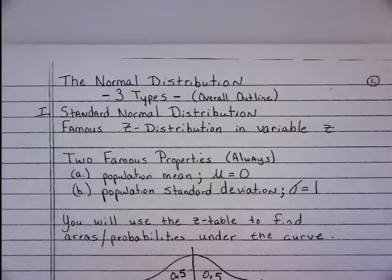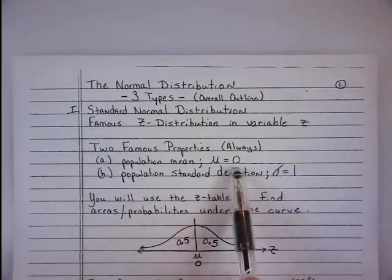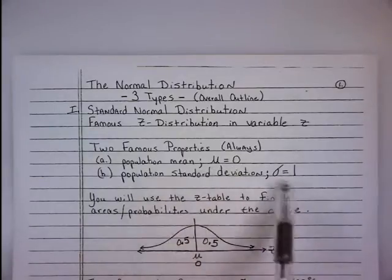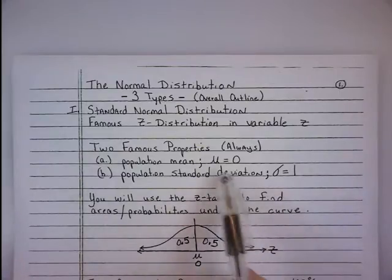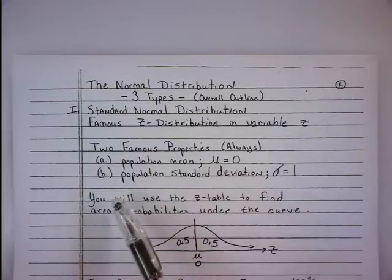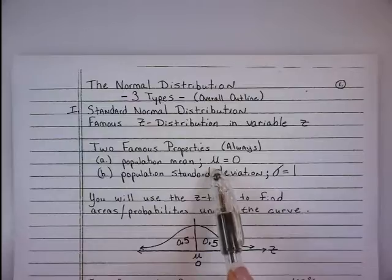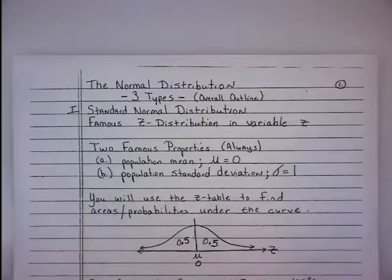Let's address the standard normal distribution and its special properties. The mean is always zero and the standard deviation is always one. In this chapter, we are going to deal with population notation. In chapter three, we used x-bar a lot for the sample mean, but in this chapter we will be using population notation because these are populations we're speaking about.